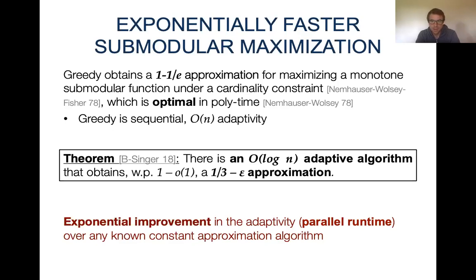This is a log-n adaptive algorithm that obtains with high probability an approximation arbitrarily close to 1/3. This is an exponential improvement in adaptivity compared to any previously known constant factor approximation algorithm for submodular maximization. So if we can perform function evaluations in parallel, we can now solve submodular maximization exponentially faster by exploiting parallelization.